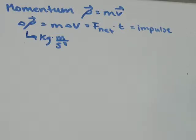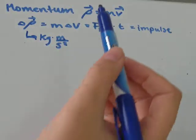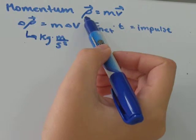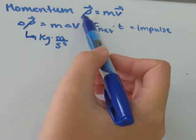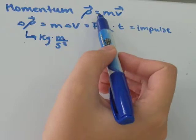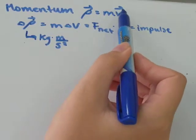Momentum is described by the mass of an object multiplied by the velocity an object is traveling at. We use the Greek letter rho to represent momentum, and it's a vector quantity with a direction, equal to mass times velocity.